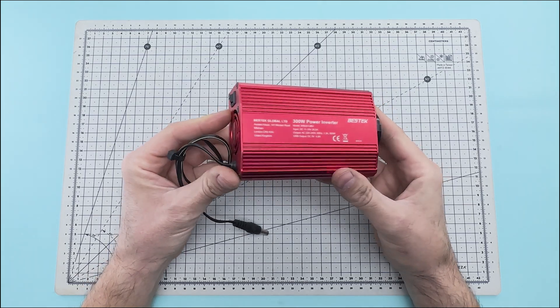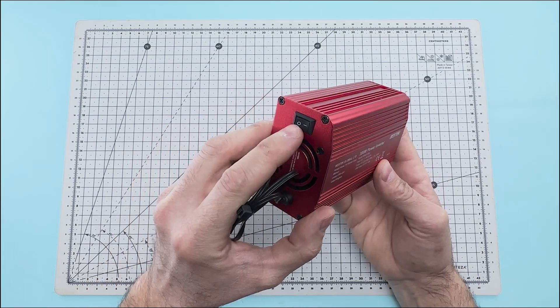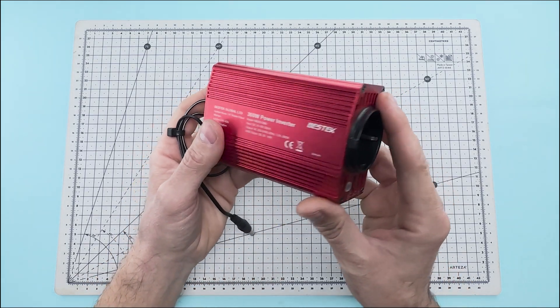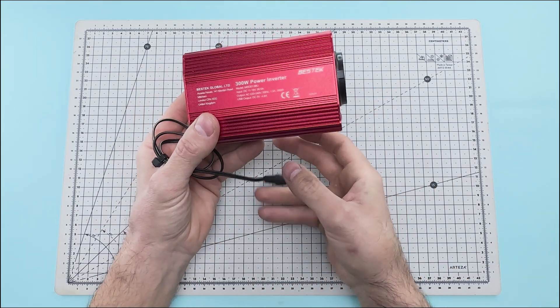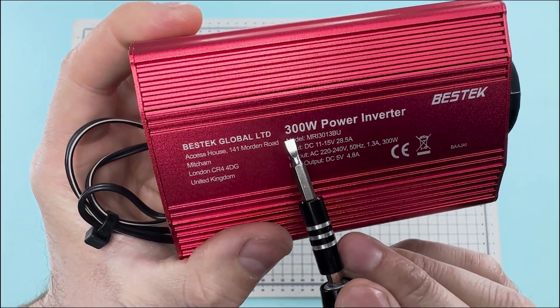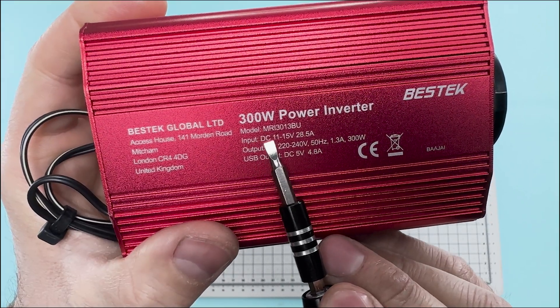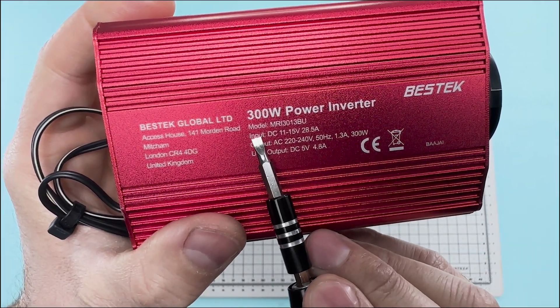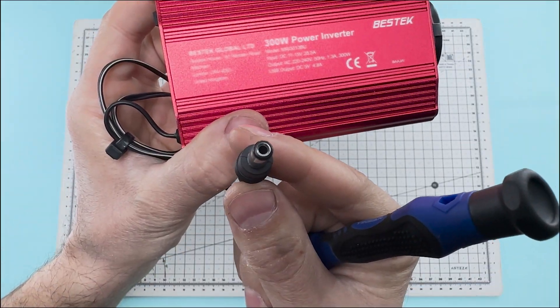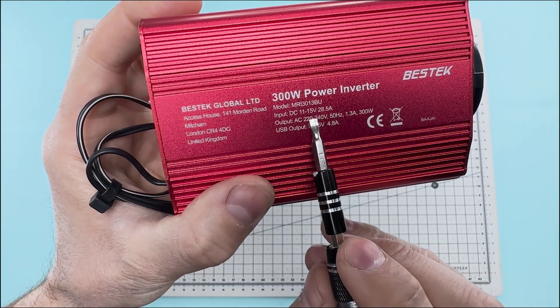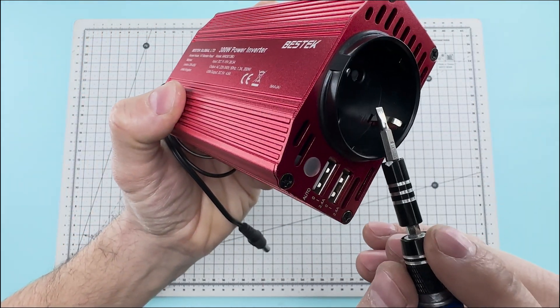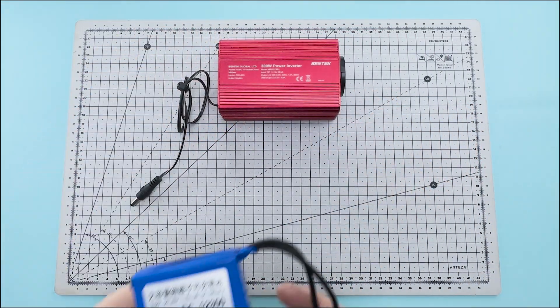We are going to create a small electrical circuit that feeds back into itself. We will use a 300 watt power inverter. This power inverter is powered by a 12 volt direct current and has an output of 220 volts of alternating current at 50 hertz. The power inverter will transform the voltage from 12 volts direct current to 220 volts alternating current.